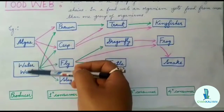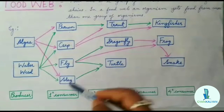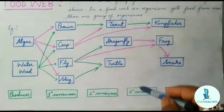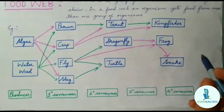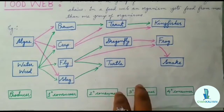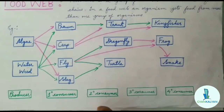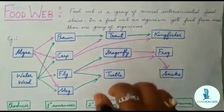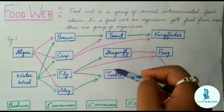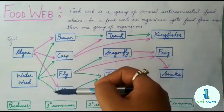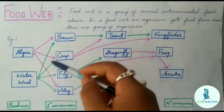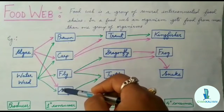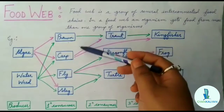The producers are algae and waterweed. The primary consumers include prawn, carp, fly, and slug. The secondary consumers include trout, dragonfly, and turtle. The tertiary consumers include kingfisher, frog, and snake. The quaternary consumers include larger animals. So food web is basically a group of several interconnected food chains — one food chain is connected to the other food chain, and hence they form a food web. In a food web, an organism is dependent on more than one group of organisms for food, and hence food web is the interconnection of food chains.